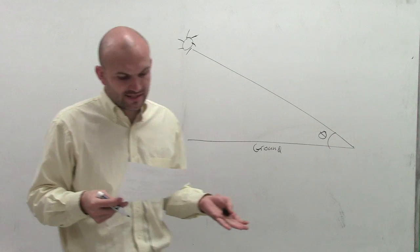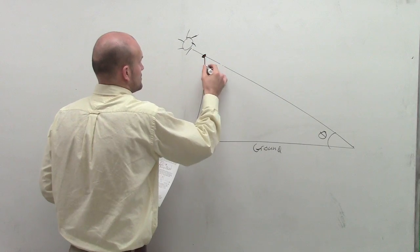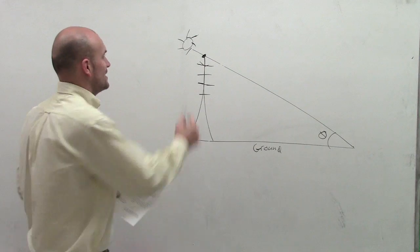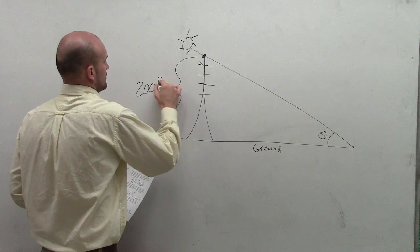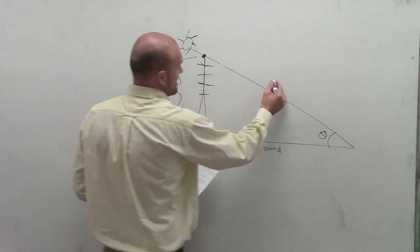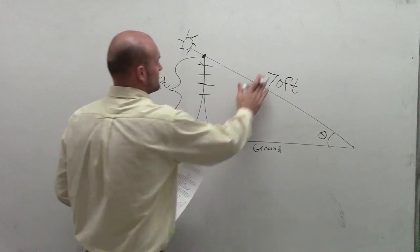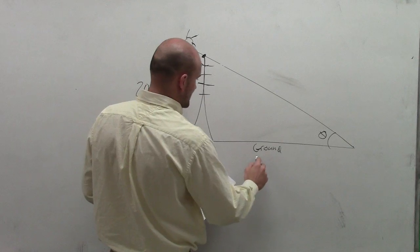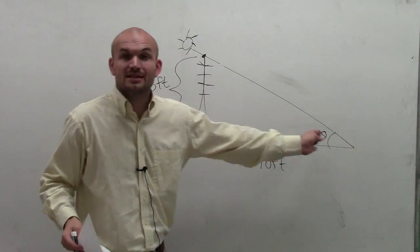Since we want to find the angle of elevation of the sun, we want this angle that goes up from our horizontal — which will be our ground — up to the sun. Now, it says there is a 200-foot tower. We'll draw a nice little tower. The height of that tower is 200 feet. Make sure you label it. And then it says the length of the shadow is 70 feet. So we have a height and a shadow length of 70 feet.